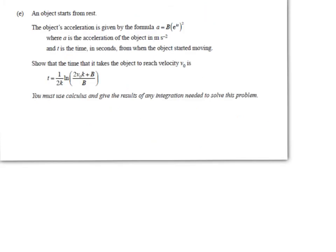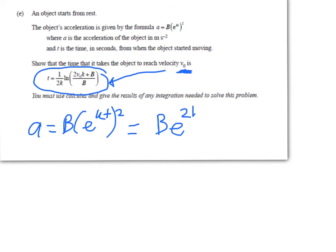An object starts from rest, and its acceleration is given by the formula a = Be^(kt²). We should already be thinking we can simplify that formula. a is the acceleration, and t is the time in seconds from when it started moving. We have to show that the time it takes to get to velocity v₀ can be written as this formula. We're going to solve the velocity equation for t.